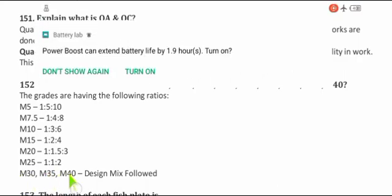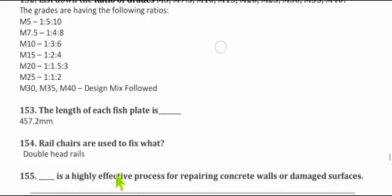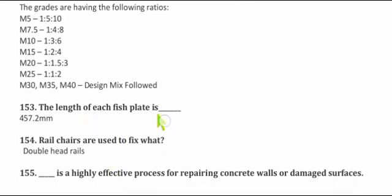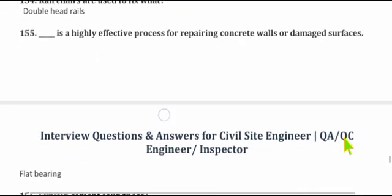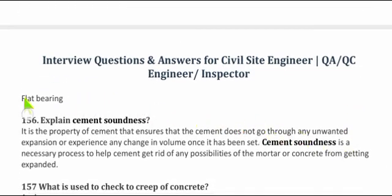Question 153: What is the length of each fish plate? It is 457.2 mm. Question 154: What are rail chairs used for? Rail chairs are used to fix flat-bottom double-headed rails. Question 155: What is a highly effective process for repairing damaged concrete walls and surfaces? The answer is guniting (shotcreting).